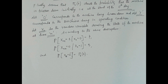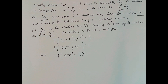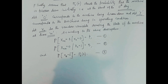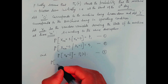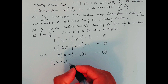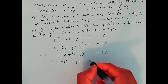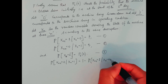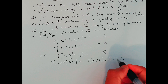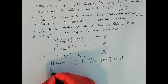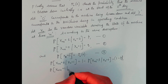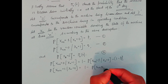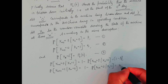Since the Markov chain has only two states, 0 and 1, we immediately get that P(Xn+1 = 0 | Xn = 0) = 1 − p, and P(Xn+1 = 1 | Xn = 1) = 1 − q.